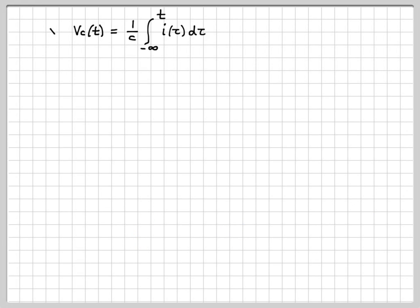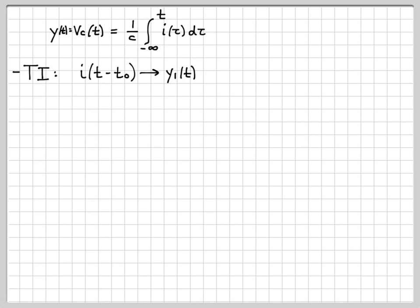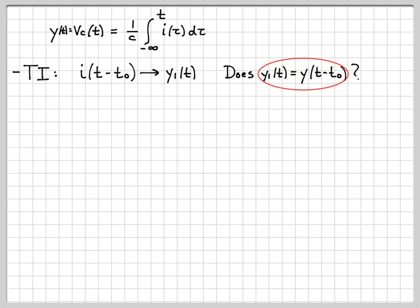Now let's talk about time invariance. If I'm time invariant, delaying the input yields the same output signal just delayed by the same amount. I'm going to let my input be a time-delayed I of T — delayed by t0 — which yields output y1 of T. What I need to find out is whether y1(t) equals y(t − t0). If I of T yields Y of T, then I(t − t0) must yield Y(t − t0) for a time-invariant system.